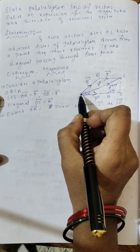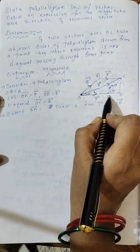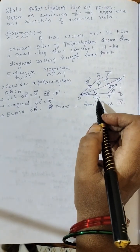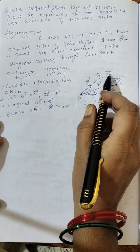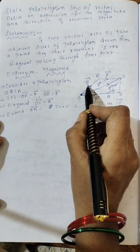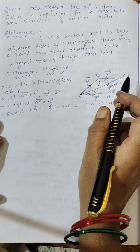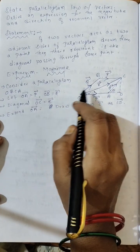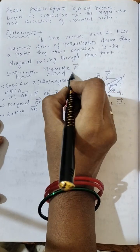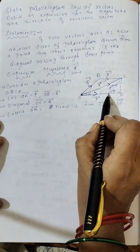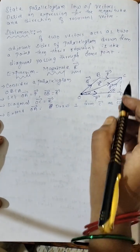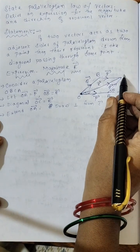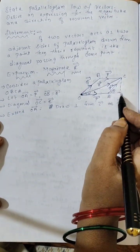I consider a parallelogram O, B, C, A. Let the length of OA be P and OB be Q. Opposite sides are equal in a parallelogram, so BC = P and AC = Q. The diagonal OC represents the resultant with length R. To find R, we extend OA up to point D, then draw a perpendicular from C as CD. Here the angle OCD is alpha and CAD is theta.